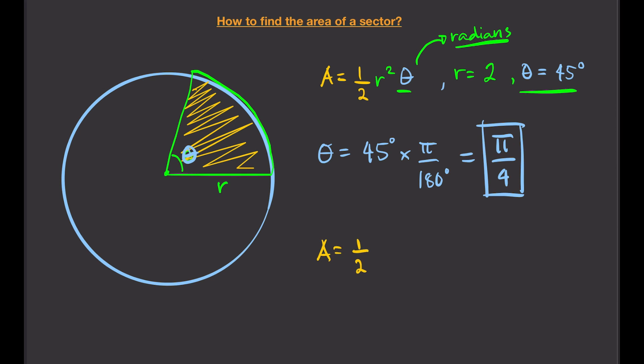Area equals (1/2) × r² × θ. R is 2, so that gives us (1/2) × 2² × (π/4). 2 squared is 4, and the 4 in the numerator and denominator cancel out, leaving us with π over 2.